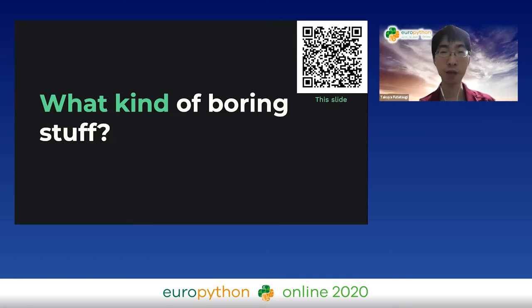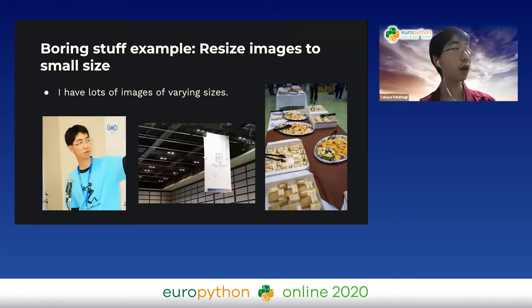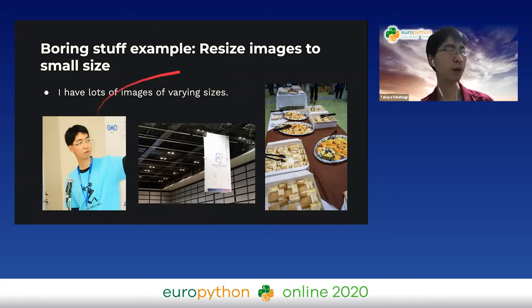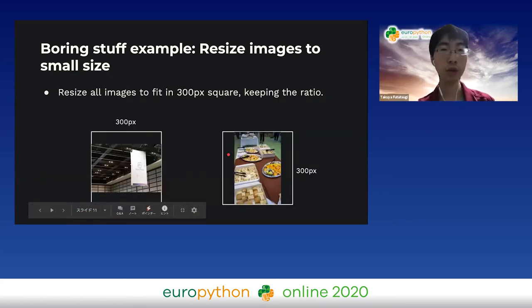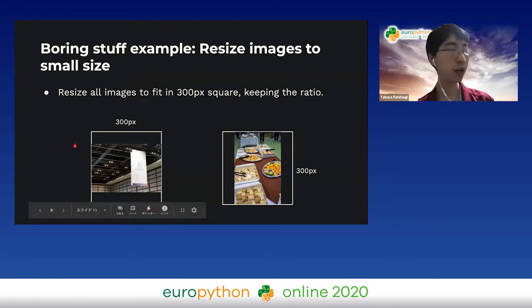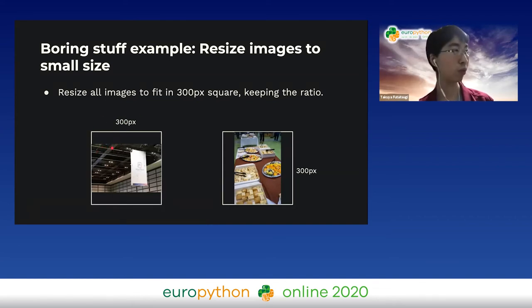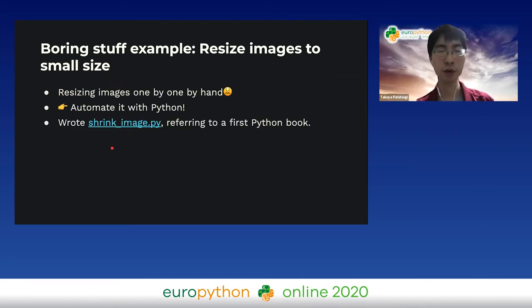This talk deals with resizing images to a small size as an example of boring stuff. I have a lot of images of varying sizes - these are last year's PyConJP pictures. I want to resize all images to fit in 300 pixels square, keeping the ratio. For example, an image longer in width than in height would be resized to a width of 300 pixels. Resizing them one by one is tedious, so automate it with Python.